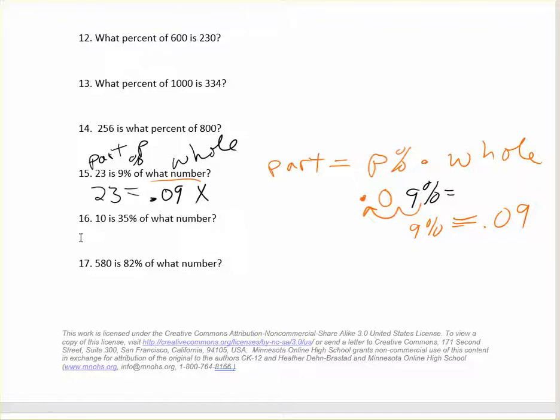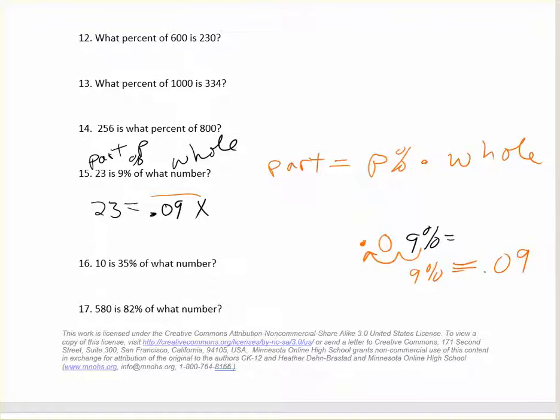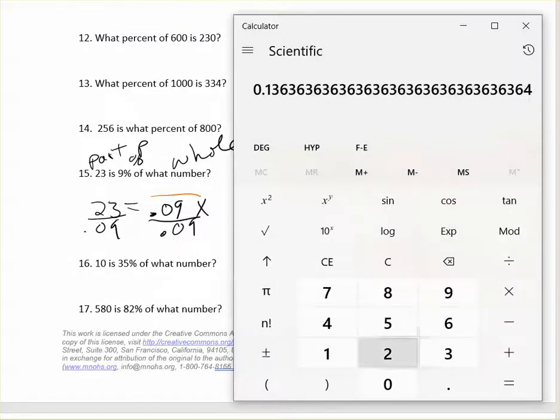So how would we solve that problem? We have to divide, but we also have a decimal. So you're just going to be dividing by a decimal number, 0.09. Divide both sides by 0.09. And you have calculators that you can use. So take 23 divided by 0.09.